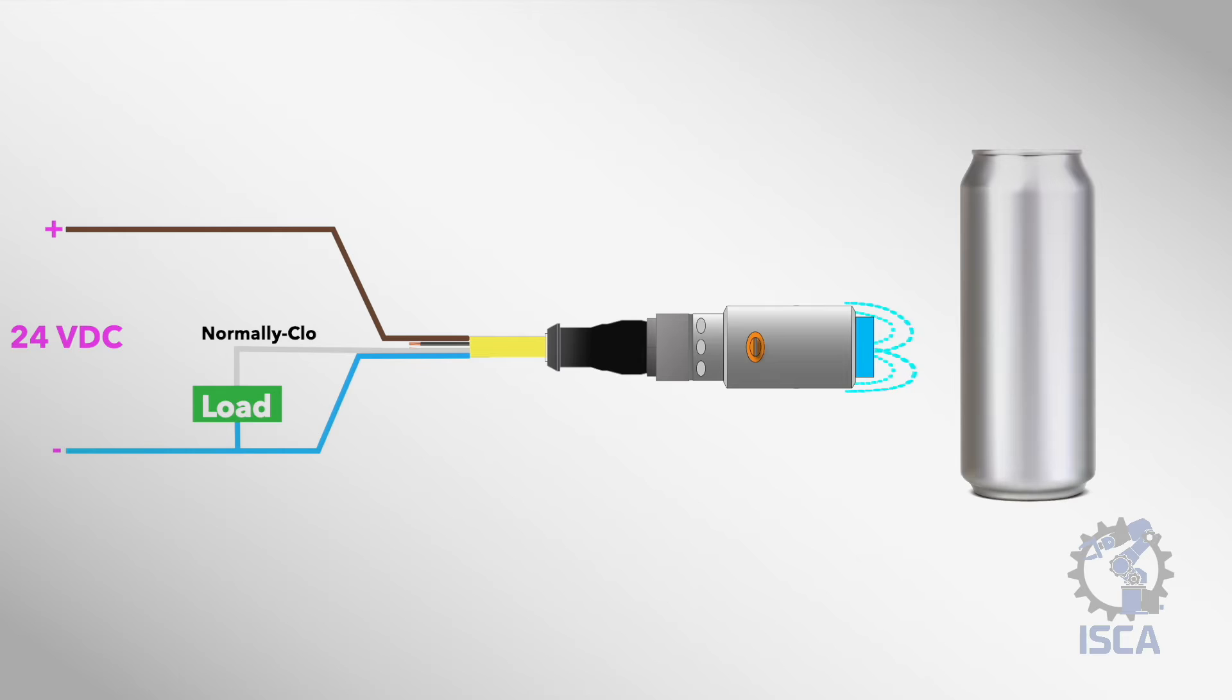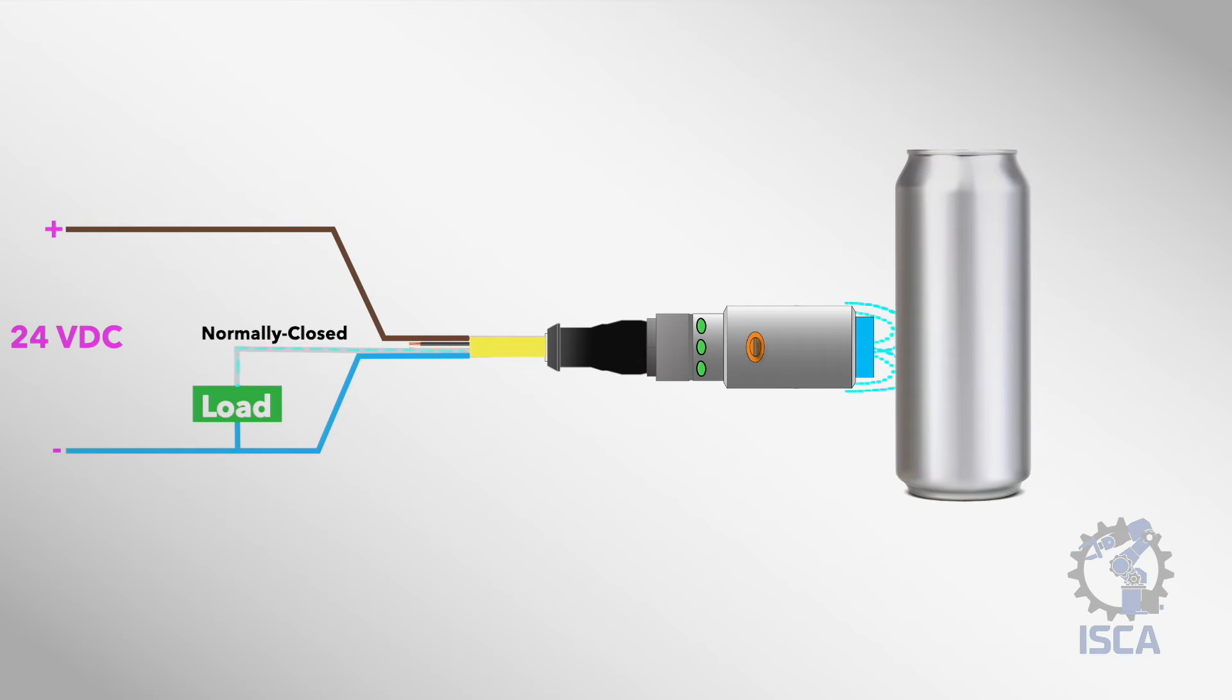Conversely, the white wire is the normally closed NC output. It continuously sends a baseline signal until a target is detected, at which point the signal stops.